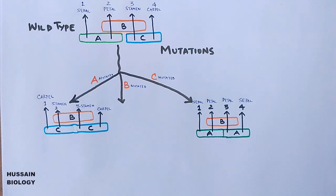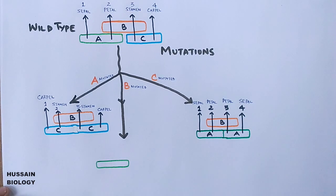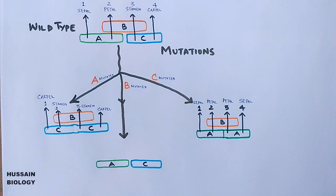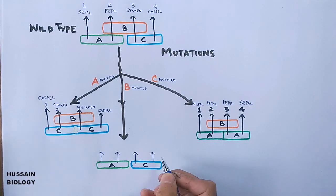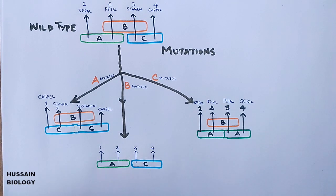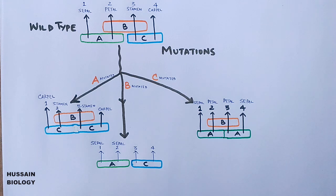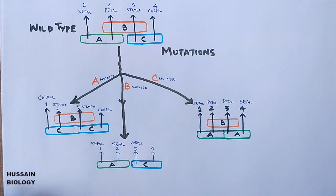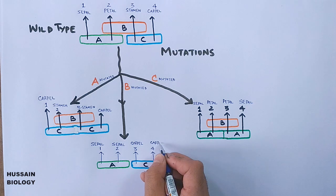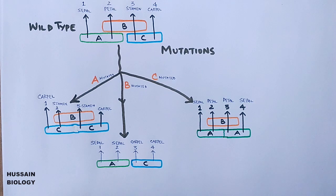Finally, in a B gene mutation — since B genes are not antagonistic to any gene — only A and C will express. Whorl 1 develops as sepal (A); whorl 2 also becomes sepal (A alone, since B is absent); whorl 3 becomes carpel (C alone, since B is absent); and whorl 4 also becomes carpel (C). So from the B gene mutation, petal and stamen are not developed and are replaced by sepal and carpel. These are the possible phenotypes when A, B, or C class genes are mutated.